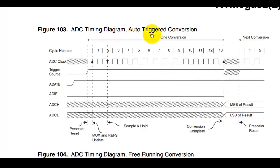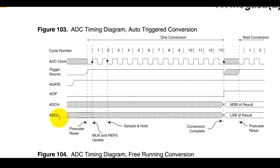This is the ADC timing diagram for auto-triggered conversion. The first conversion takes 25 clock cycles and subsequent conversions take only 13 clock cycles. First enable and select the trigger source, then enable the Automatic Trigger Enable bit (ADATE). When the ADIF flag goes high, read the results from ADCH and ADCL.